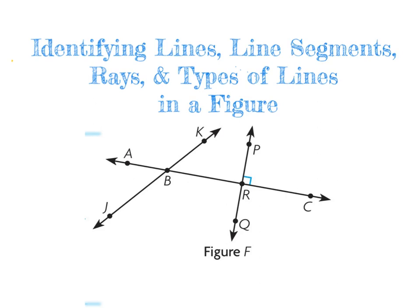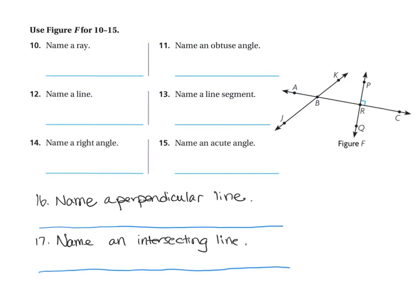What we're going to do is talk about some of the different things we see in here — whether they're lines, right angles, obtuse angles, perpendicular lines, parallel lines — whatever we see, we're going to identify. Here we have that same exact figure on the next page, just a little smaller. I got this from your book, but I added a couple of my own problems.